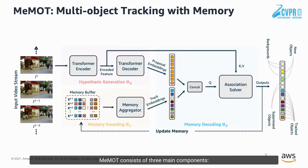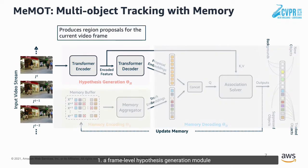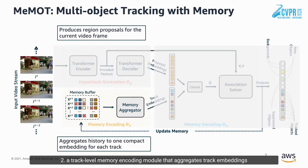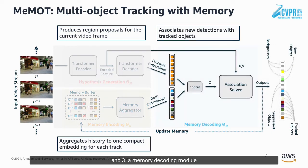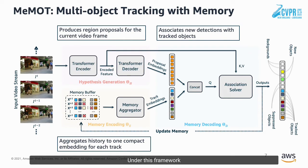MAMOT consists of three main components. Number one, a frame-level hypothesis generation module that produces region proposals for the current video frame. Number two, a track-level memory encoding module that aggregates track embeddings. And number three, a memory decoding module that associates the new detections with tracked objects. Under this framework, MAMOT performs object detection and association in a common framework in an online manner.